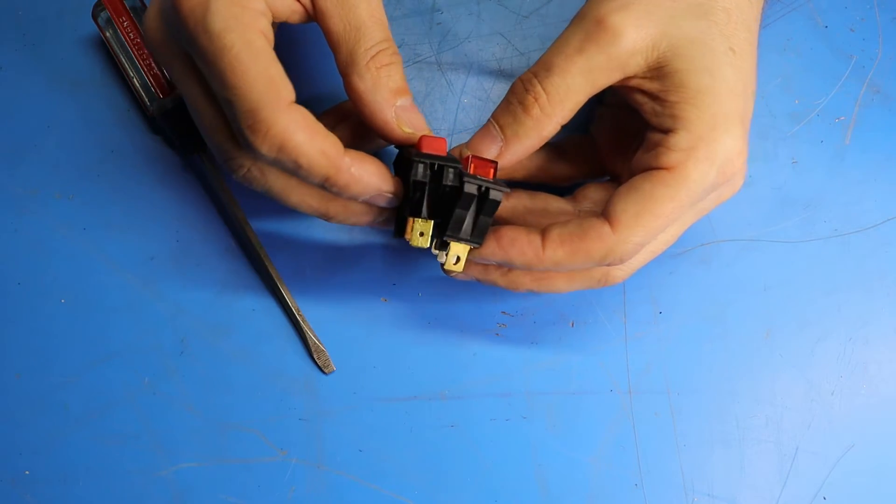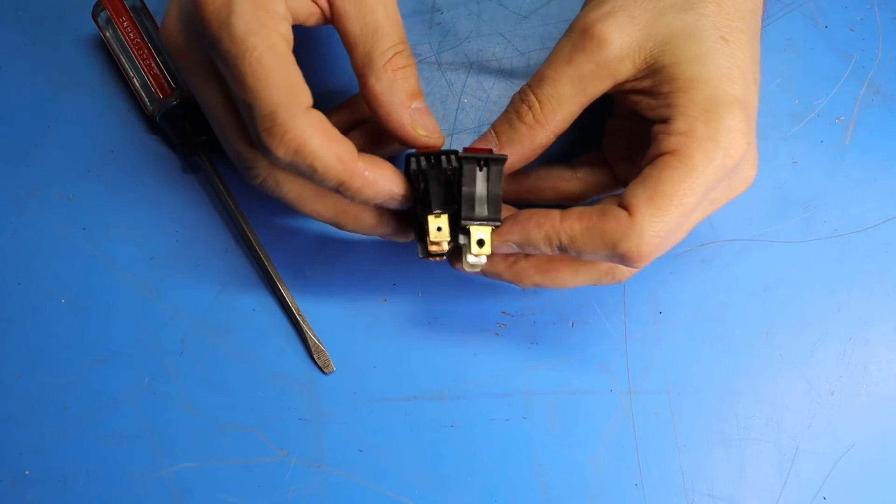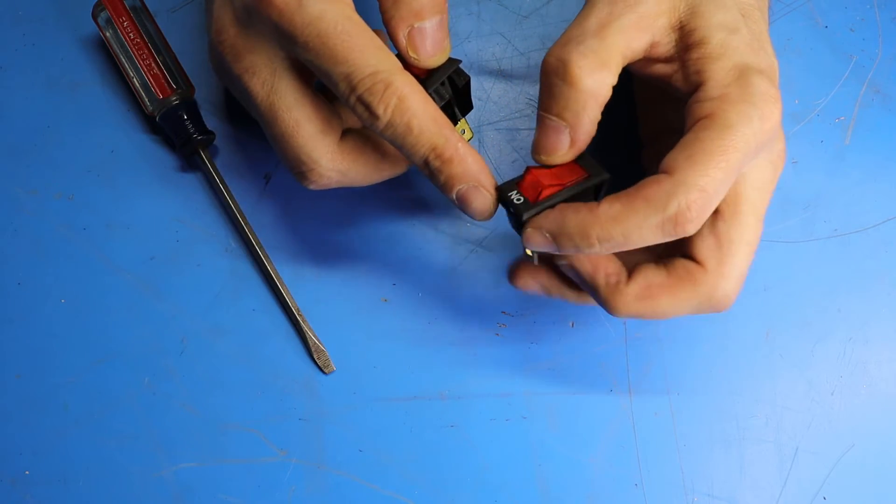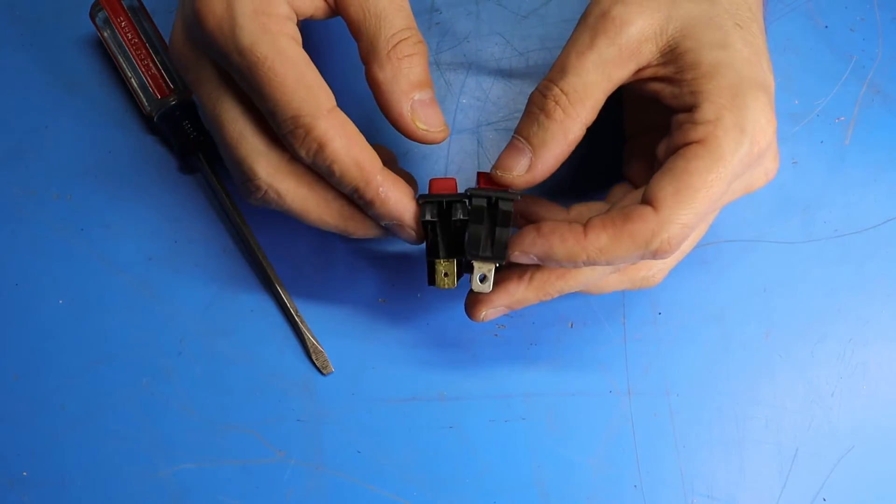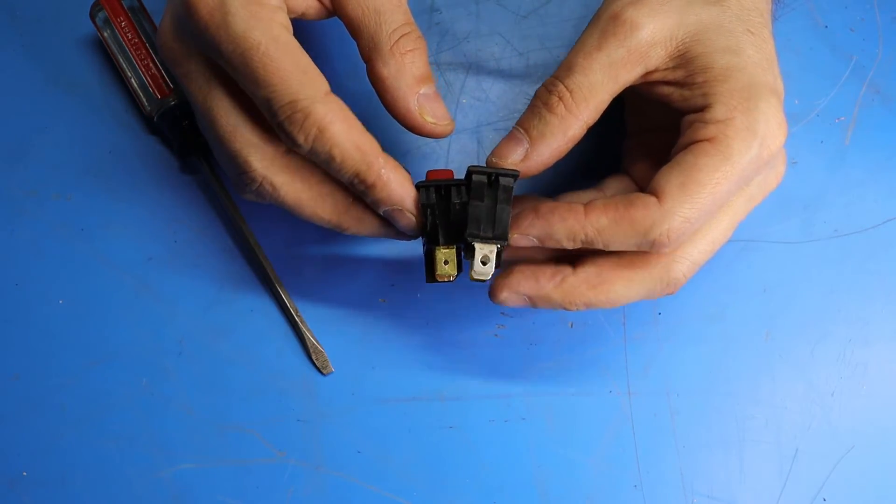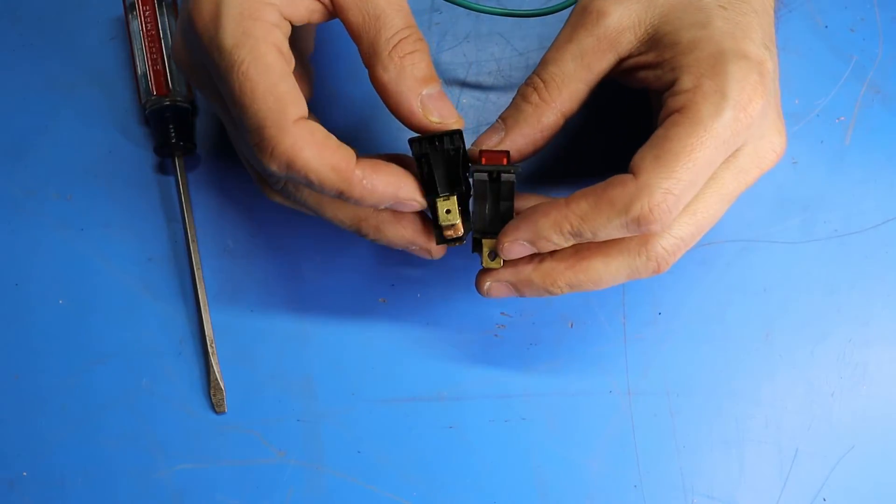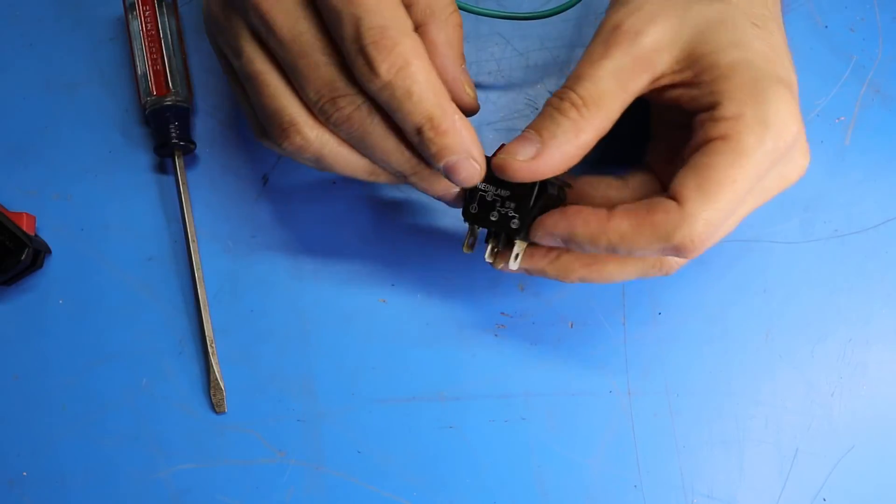And then just to double check the size, we'll put them side by side and they pretty much look like the same thing, except that the tabs on this one are a little bit less aggressive, I'll call it, than the original Carling. So this may not sit in the front panel quite as tightly as the Carling, but I think it'll work.